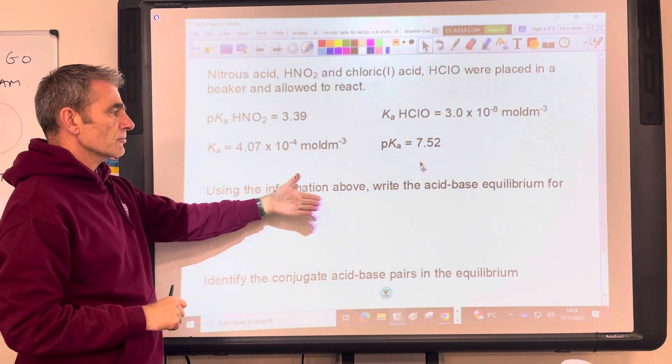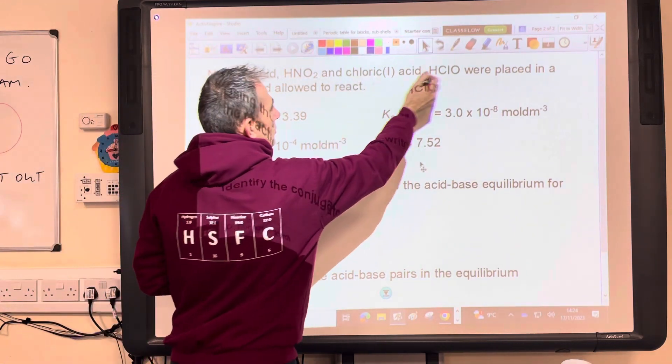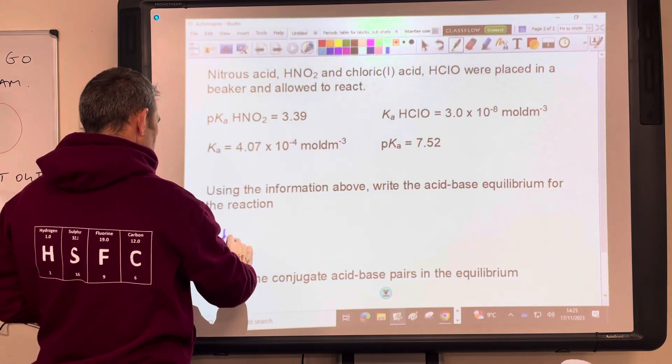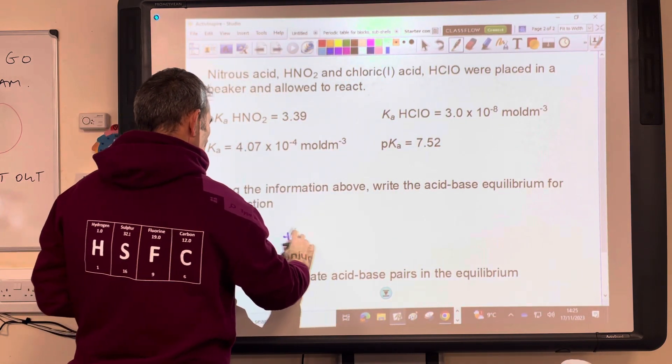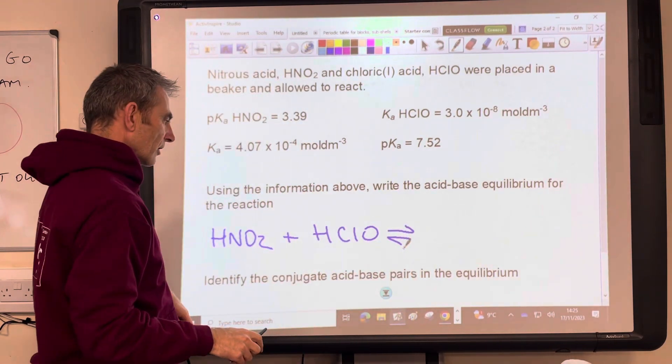So what we can do now is write this acid-base equilibrium and then we'll look at the conjugate acid-base pairs. So the HNO2 reacts with the HClO and an acid-base equilibrium is set up.